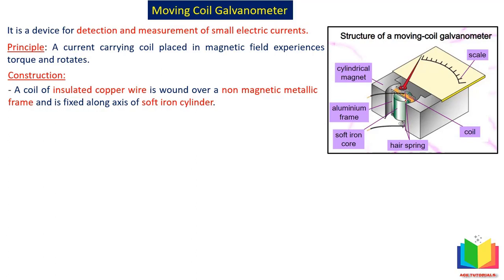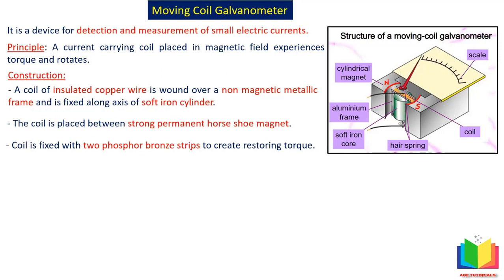This coil is placed between strong permanent horseshoe magnets — you can see the north pole here and the south pole here. The horseshoe magnets generate the magnetic field. Next, the coil is fixed with two phosphor bronze strips to create restoring torque — there are springs on the top as well as on the bottom of the coil. So this coil is suspended using these two springs on the top as well as on the bottom.